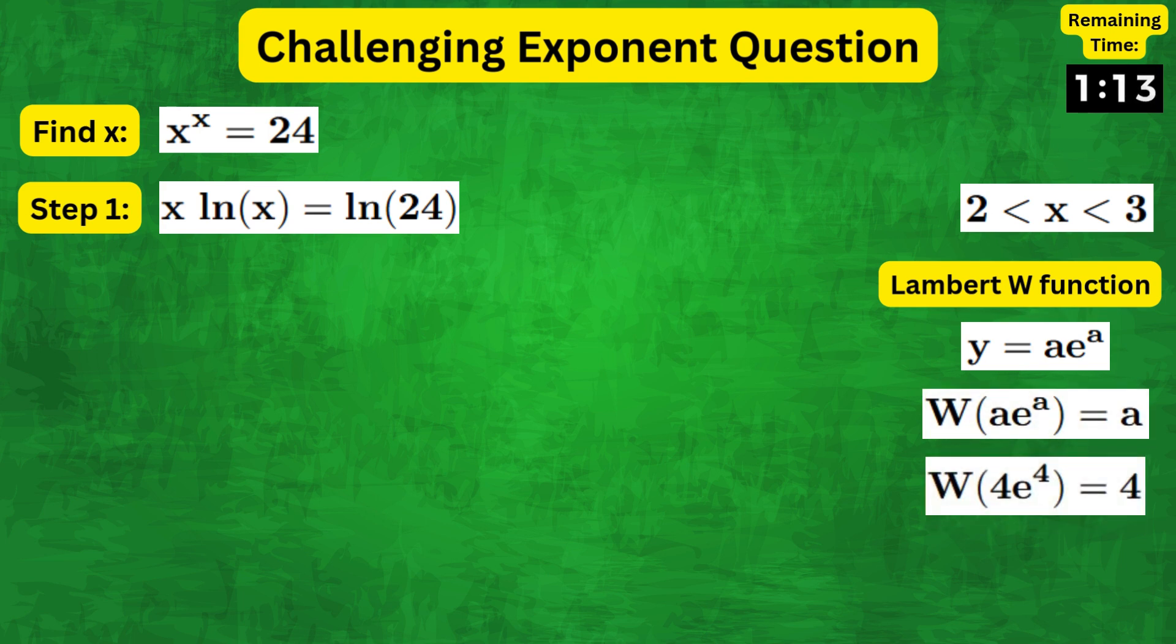So for example, W of 4e to the 4 equals 4. Now notice that we do not have an exponent in this equation. However, since e and natural log cancel each other out, we can write this x as e to the natural log of x.